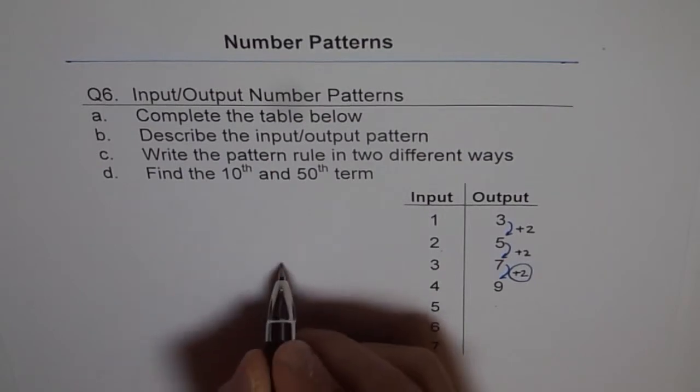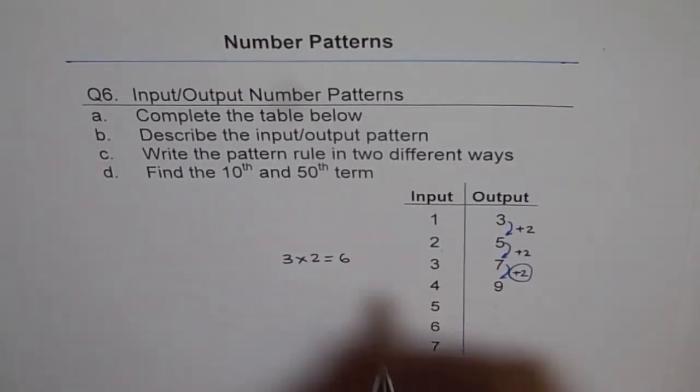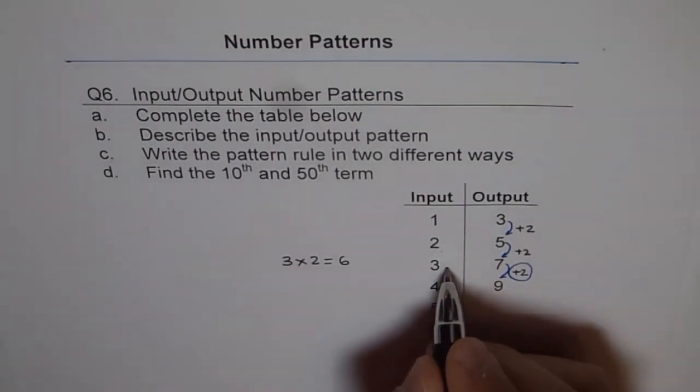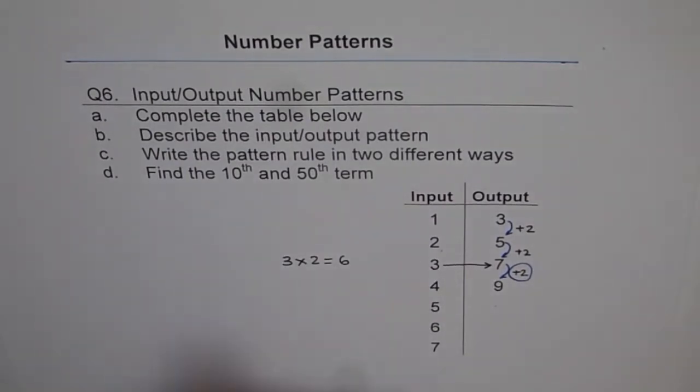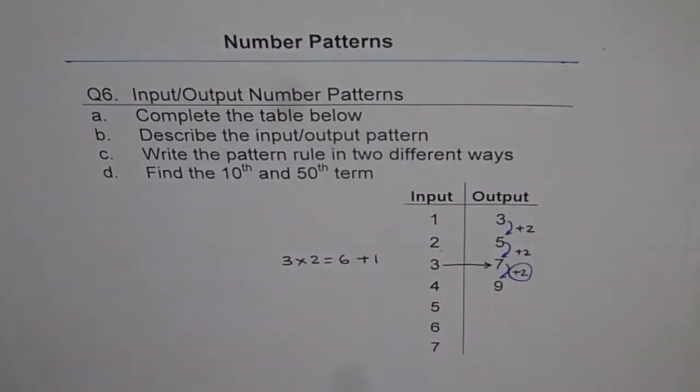What is 3 times 2 equals to? Let's do it. 3 times 2 is equal to 6. But what do I need? I need, from 3, I need 7. So from 6, how will I get 7? Plus 1. Plus 1 gives me 7. Got it.